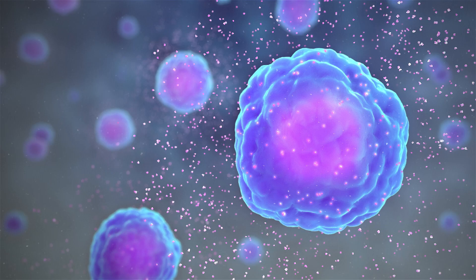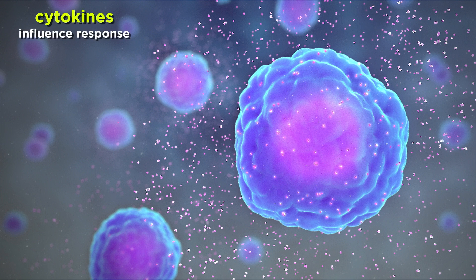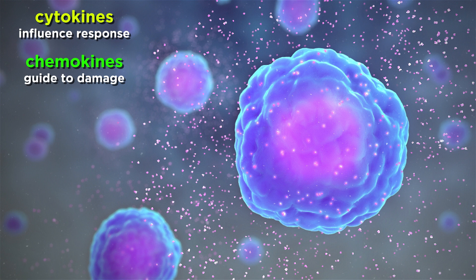An immune cell can also receive chemical messages from other cells that can influence its activity. These messages are often in the form of proteins that are secreted, such as cytokines, which influence how an immune cell responds to a particular threat, or chemokines, which help guide immune cells to the site of damage or infection.